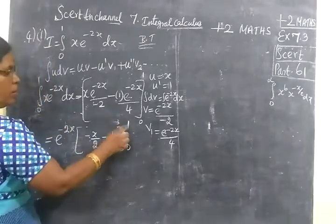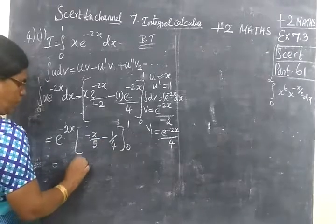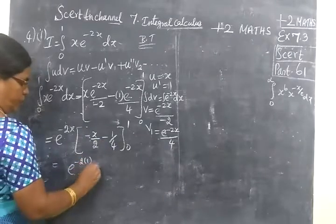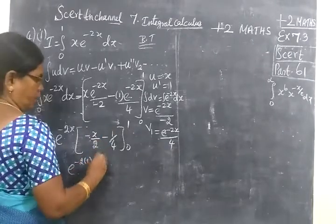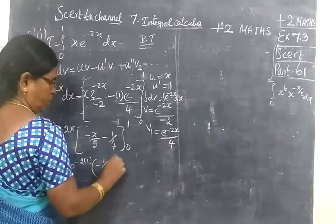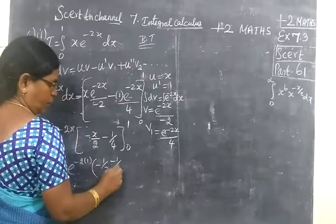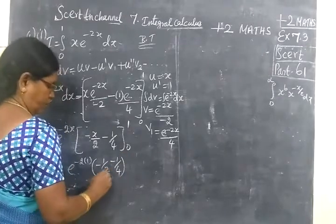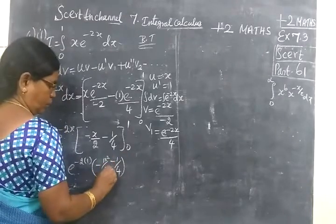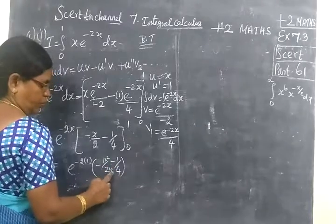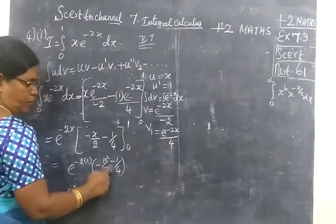So now apply upper limit. So e power minus 2 times 1. Wherever x comes, you are writing 1. Minus 1 by 2 minus 1 by 4. To make the denominator equal, multiply by 2. Now the denominator is 4.